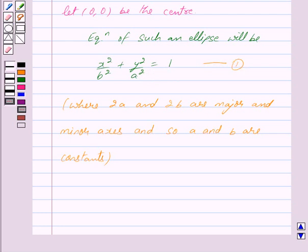Since there are two arbitrary constants a and b, in order to eliminate them we shall differentiate equation 1 two times. So differentiating 1 with respect to x we get